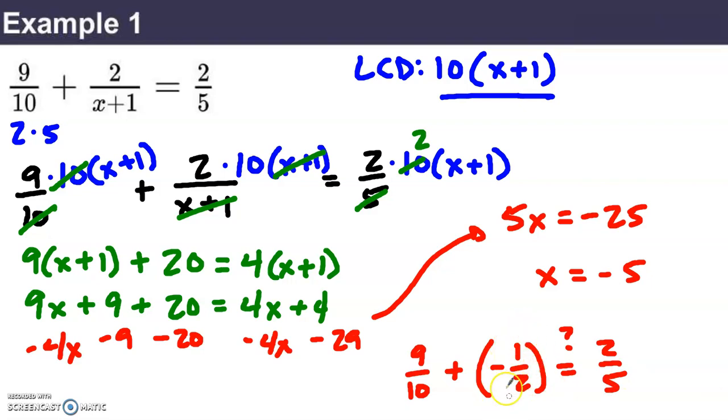Well, if I think about a fraction that means the same thing as 1 half that has a denominator of 10, that would be 5 tenths. So, 9 tenths minus 5 tenths is 4 tenths, 2 fifths. It actually does work. I can say that that solves the equation.